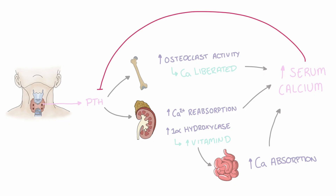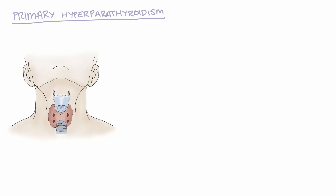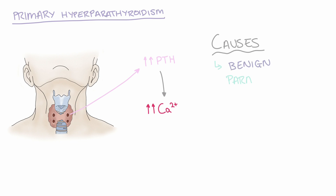Hyperparathyroidism can be divided into either primary, secondary, or tertiary. In primary hyperparathyroidism there is uncontrolled release of parathyroid hormone from chief cells, leading to hypercalcemia, which is defined clinically as a calcium level above 2.6 millimoles per litre. This is usually caused by a benign tumour of a single parathyroid gland called a parathyroid adenoma, though it is sometimes caused by a malignancy called parathyroid carcinoma.